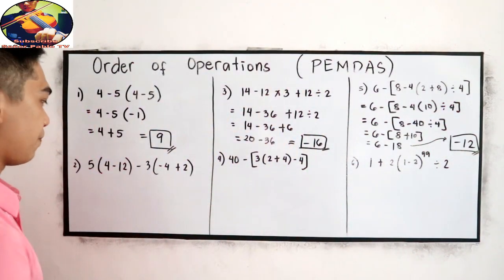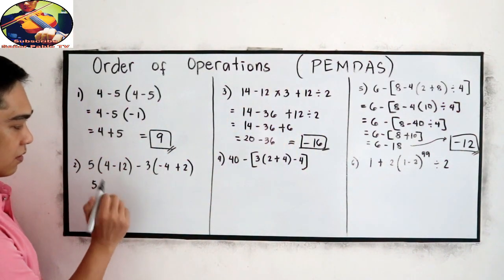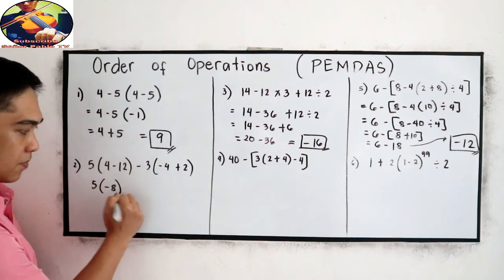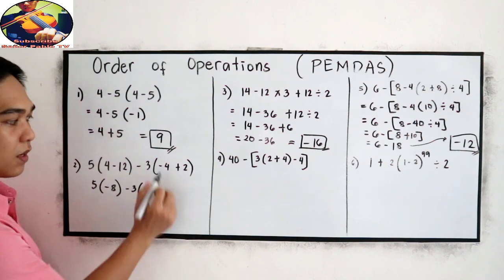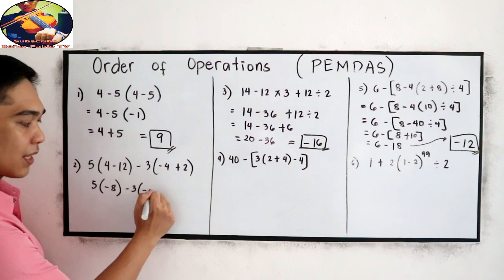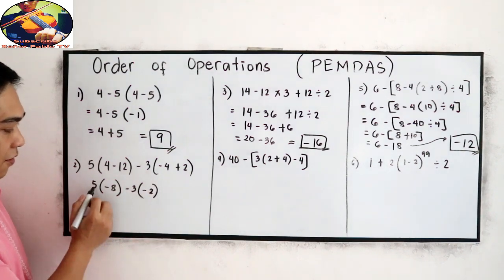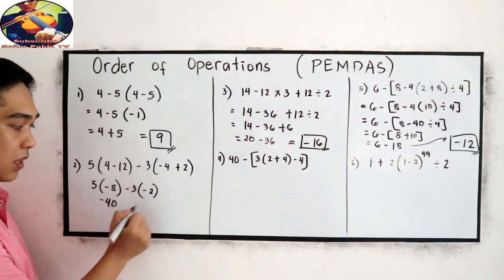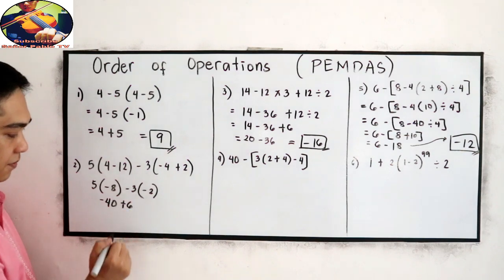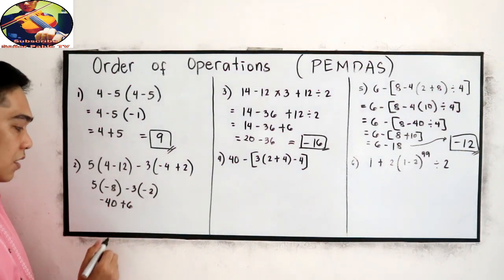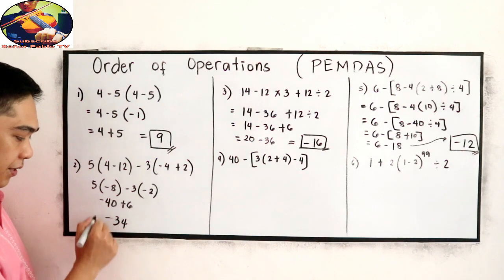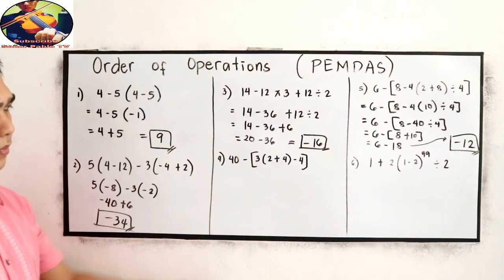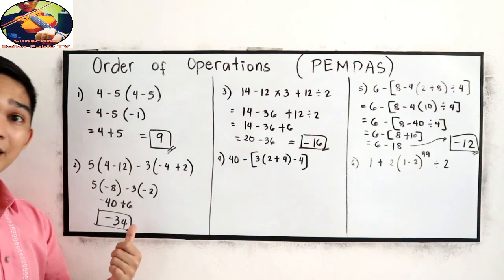Let's check number 2. Inside the parentheses: 4 minus 12 is negative 8. Copy minus 3. Negative 4 plus 2 is negative 2. 5 times negative 8 is negative 40. Negative 3 times negative 2 is positive 6. For the final answer: negative 40 plus 6 is negative 34.